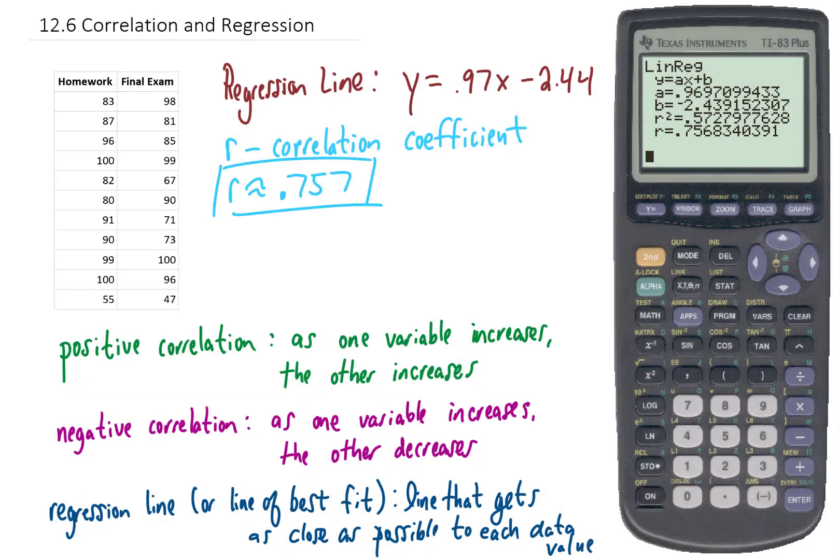Now, in general, a correlation coefficient is a number between negative 1 and positive 1. R equals 1 represents perfect linear correlation. In other words, all of the points fall along the line. R equals negative 1 represents perfect negative correlation. In other words, all of the points do still fall along a perfect line, but the data is correlated negatively. R equals 0 represents no correlation whatsoever.